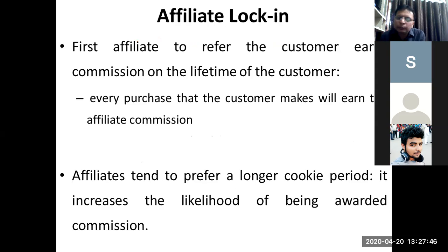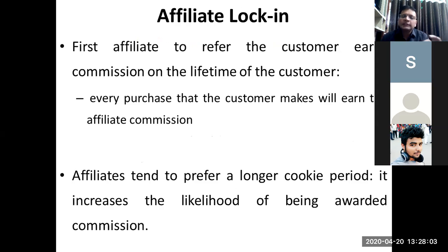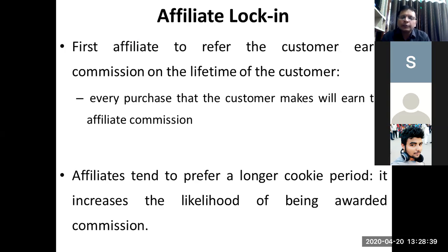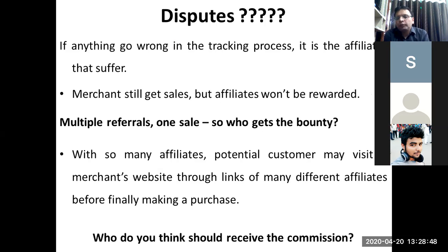Affiliates want to keep getting commission over a longer period, claiming that it was they who sent the customer to the merchant and introduced the brand. But a complication arises when the same customer has visited multiple affiliate platforms within that period. The most recent affiliate may be paid, or the commission could be shared. If four or five affiliates were visited on the same day and the transaction happened later, all of them might claim their share of revenue — dependent upon the policy agreed upon by the affiliate network and merchant.